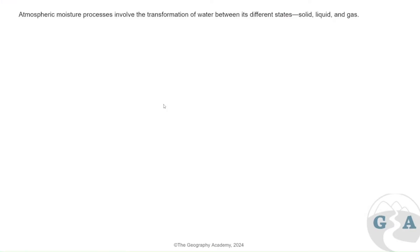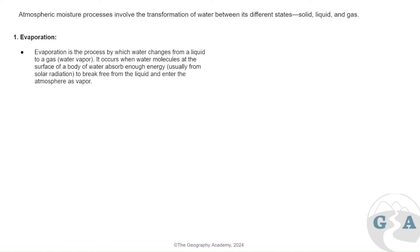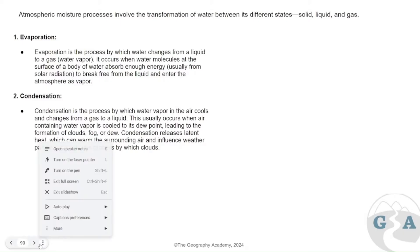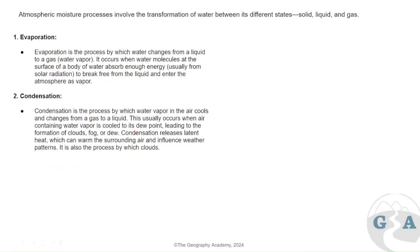The atmospheric moisture processes involve moving between solid, liquid, and gas states. Evaporation, which we talked about before with latent heat transfer, uses and absorbs energy to move molecules, causing water to evaporate into a gas. Condensation is the reverse — water vapor is cooled to its dew point, which is a key term, leading to the formation of clouds, fog, or dew. Condensation releases the latent heat that was used in evaporation, and this influences weather patterns.